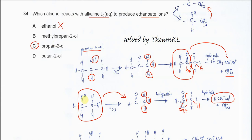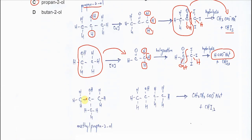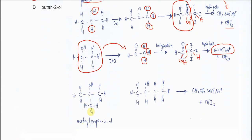How about methylpropan-2-ol? Methylpropan-2-ol is this structure here. This one actually will not be oxidized, so it will not form the methyl ketone. Methylpropan-2-ol is out because it is a tertiary alcohol and cannot be oxidized.